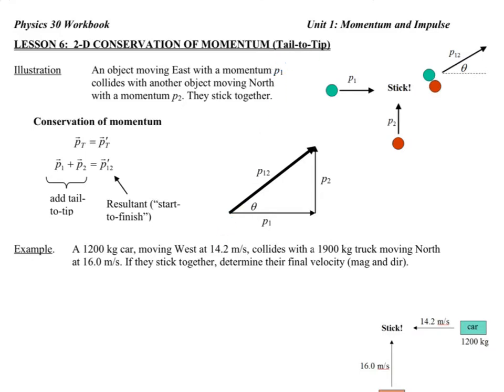In this method, it's the tail-to-tip method, this separating of the x and y is kind of done for us, because what we can see based on our lesson is that if you have two objects colliding, and one of them is in the y-coordinate only and one of them is in the x-coordinate only, you can just add these vectors together tail-to-tip, and that will give us the resultant of the two momentums together.